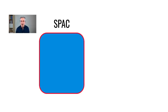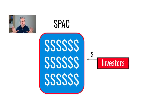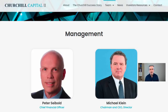Think of the SPAC as just a legal structure — an empty shell. The purpose of the SPAC IPO is to inject money into that shell, provided by both the founders, called sponsors, and the investors. In return, SPAC investors get shares in the company plus warrants, which can be very valuable. When you invest in a SPAC, you're placing a huge amount of faith in the manager's ability to find a good company to buy.